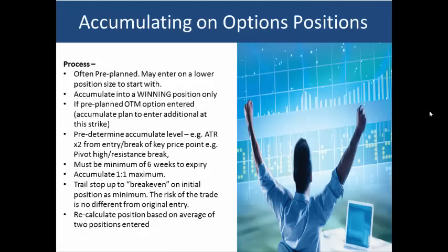If it is pre-planned then we usually enter an out-of-the-money option and we plan to accumulate additional contracts at that strike. So for example, if the underlying stock is trading at $25, we may enter a $26 call with the idea that if it breaks $26, we may subsequently enter more of the $26 call that we've already got in place.